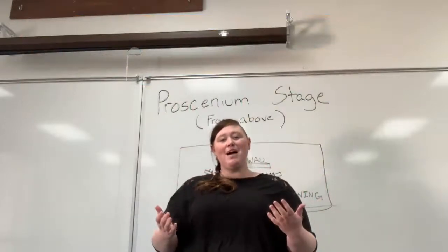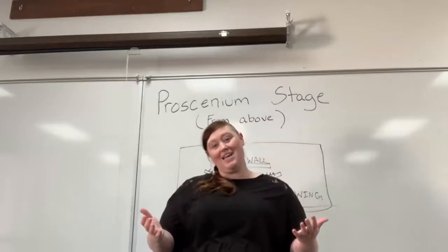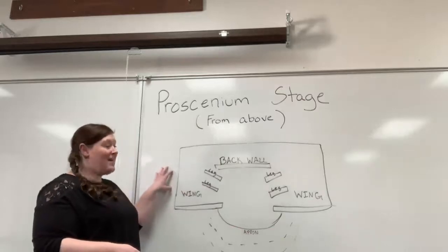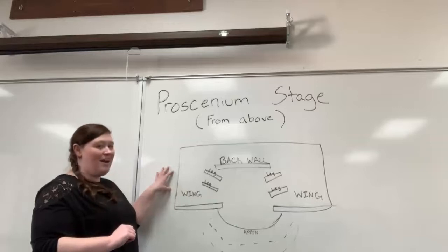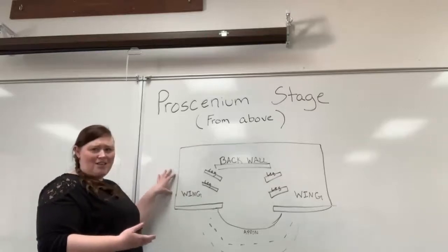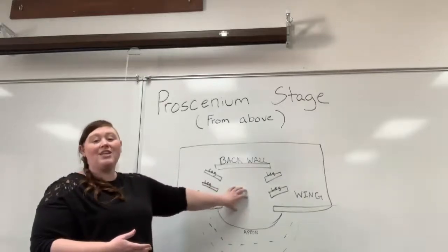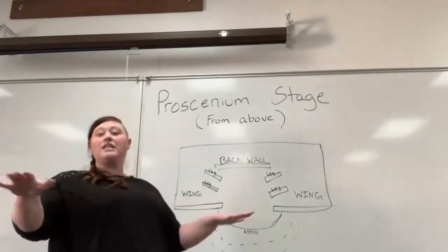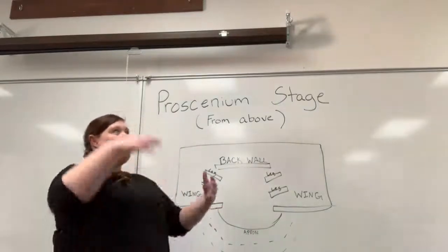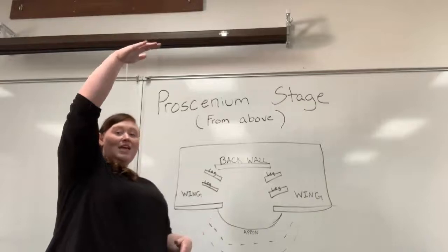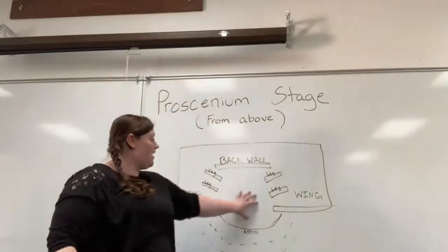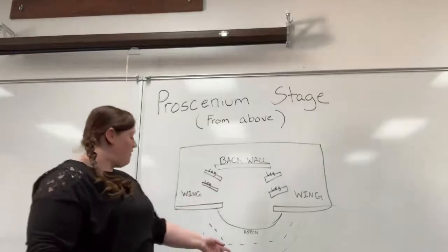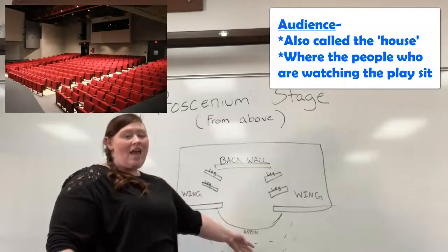So now we're going to talk about what exactly makes up a proscenium stage. We're going to be looking at this diagram right here — pardon the art skills. You might be wondering, that doesn't look like a hole in the wall. That's because we are looking at this stage as if we are standing on the roof of the theater and it is clear, and we are looking straight down. It's called a bird's eye view. We're above the stage, above the theater, and we're looking down at it. So we're seeing the stage floor from that vantage point. Let's start from the audience, which is down here, and we'll work our way up.